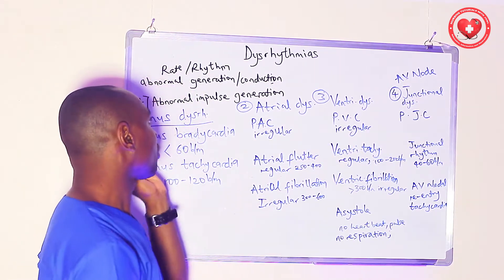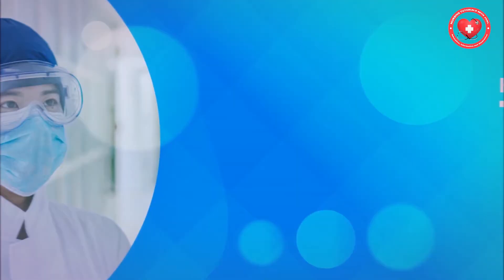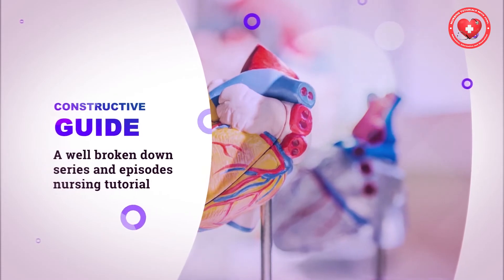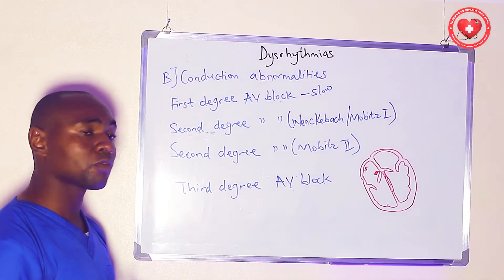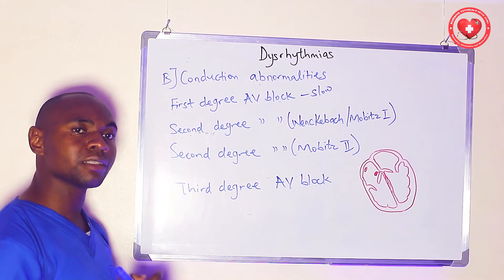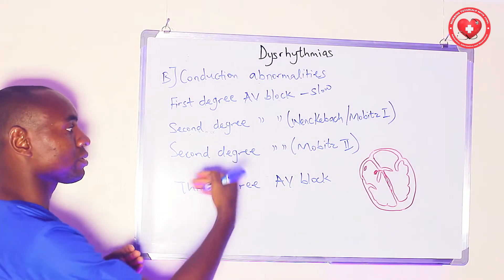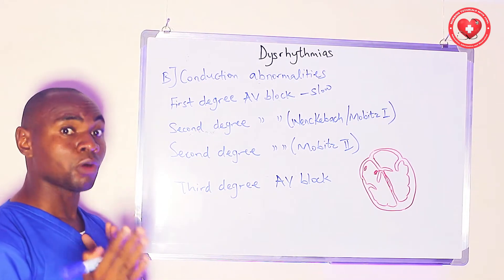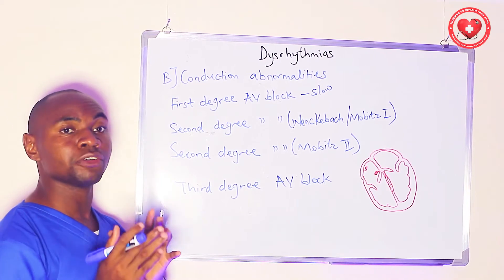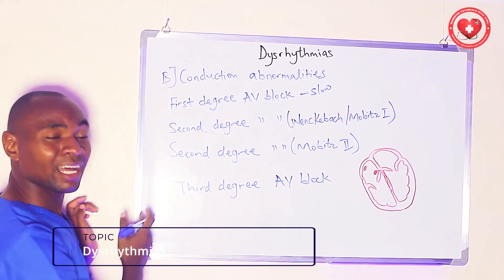The next class is conduction abnormalities, which forms another aspect of dysrhythmias. In conduction abnormalities, impulses come from the sinoatrial node, but on reaching the AV node there is a blockage — either partial or complete. The degree of conduction through the AV node gives us the classification of heart blocks.